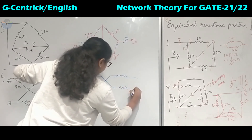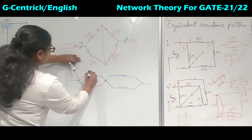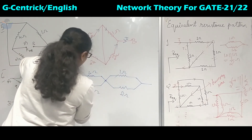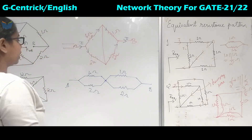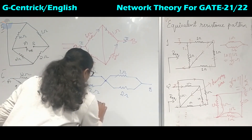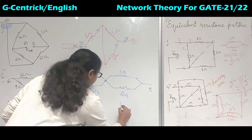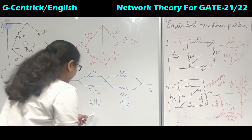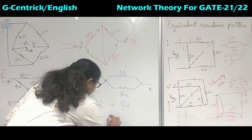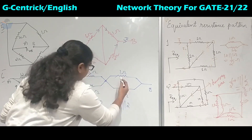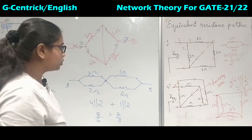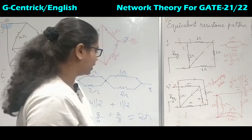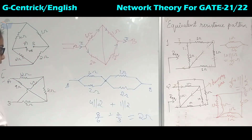Here we have 4 ohm, 2 ohm, 1 ohm, and 2 ohm. Point A and point B. Four and two in parallel gives 4×2/(4+2) = 8/6; one and two in parallel gives 2/3. These become in series, and when you solve this you get 2 ohms as the equivalent resistance.